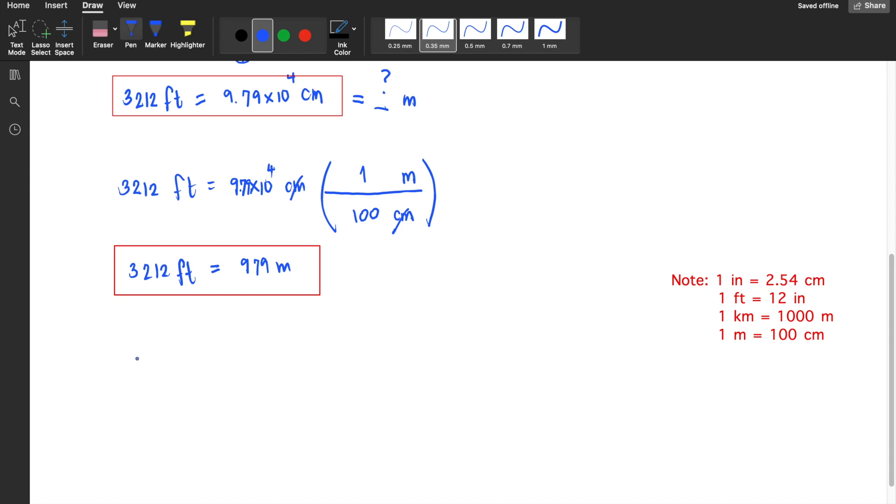Lastly, we're converting 3,212 feet to kilometers. We already know that 3,212 feet equals 979 meters. So I'll write: 3,212 feet is equivalent to 979 meters, and multiply another unit conversion. There's a direct conversion from kilometers to meters. In one kilometer, there are 1,000 meters.